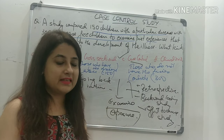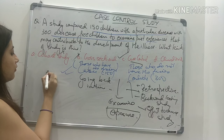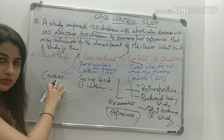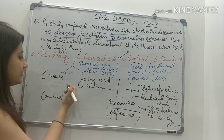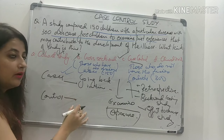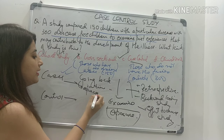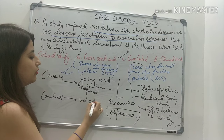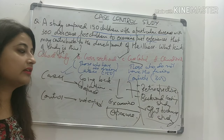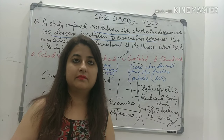Let me draw the basic design again. In a case control study, you start with cases and controls. Cases are those who have the disease; controls are those who do not have the disease. You go back in time to see how many were exposed to a particular factor and how many were not exposed. These are the terms associated with case control study - they can ask you any of these terms and ask which type of study design it is.